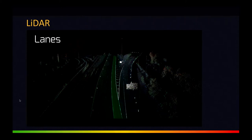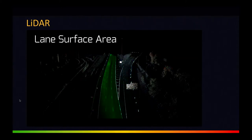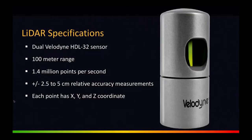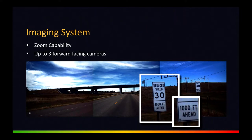We do have experience controlling the dataset to achieve better absolute accuracies as well. The LiDAR sensor we typically use is an HDL-32, produced by Velodyne. We often use two of them to support single-pass collection, allowing better coverage with less obstruction from surrounding vehicles. We get around 2.5 centimeter relative accuracy and about 1.4 million points per second. The imaging systems on our vehicles typically include three forward-facing cameras, generally five to eight megapixels — high enough resolution to zoom in and analyze the state of infrastructure and asset conditions from quite far away.